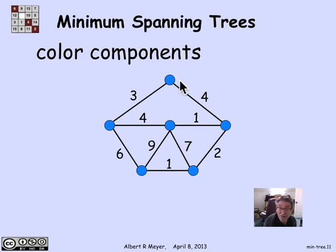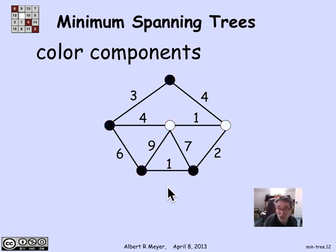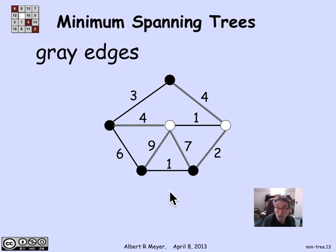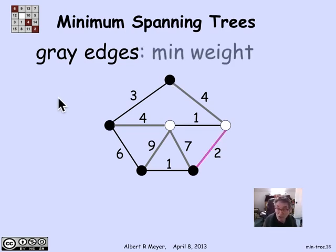To begin, we have no edges — just isolated vertices, giving six connected components. We can color them black and white in any way, with at least one black and one white. I've colored two vertices white and the other four black. The gray edges — where one endpoint is black and the other white — are highlighted. The weights of the gray edges are 4, 4, 9, 7, and 2. The minimum weight gray edge is 2, so I choose that to start building my tree.